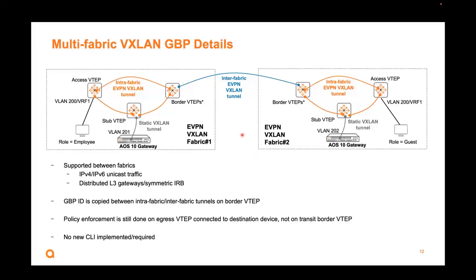For what's supported between fabrics: IPv4 and IPv6 unicast traffic in the overlay is supported, along with distributed layer 3 gateways and symmetric IRB. The GBPID is copied between the orange intra-fabric and the blue inter-fabric tunnels on the border VTAP — the border relays the GBPID between the fabrics. Policy enforcement is still done on the egress VTAP, not the transit border VTAP. The border VTAPs relay the GBPID but do not enforce policy.